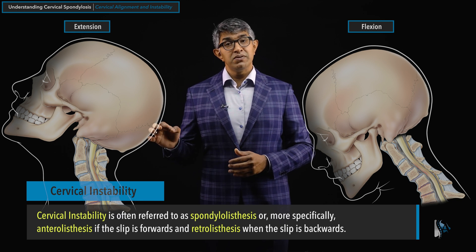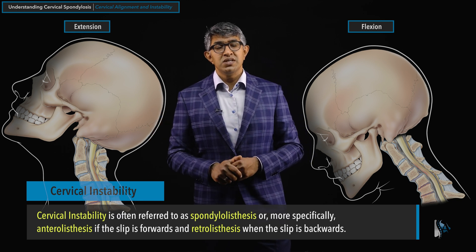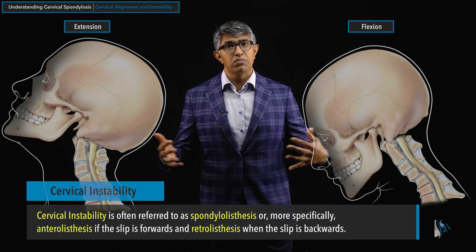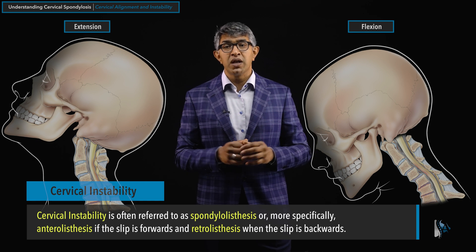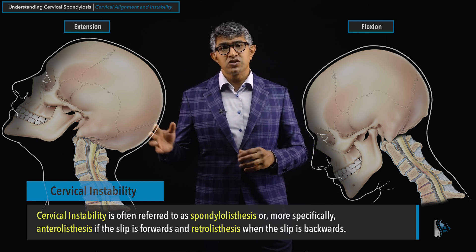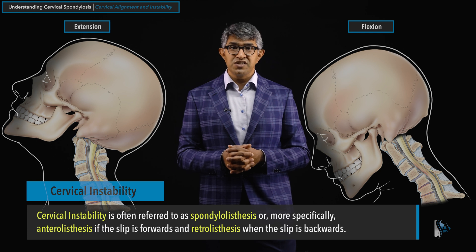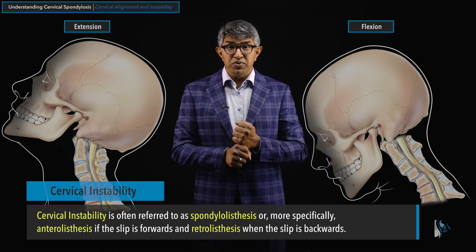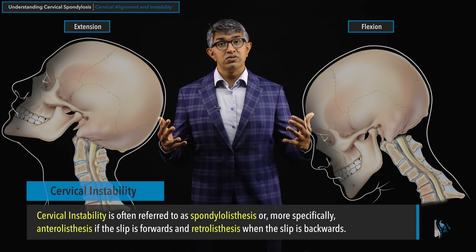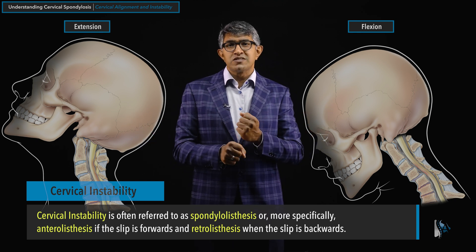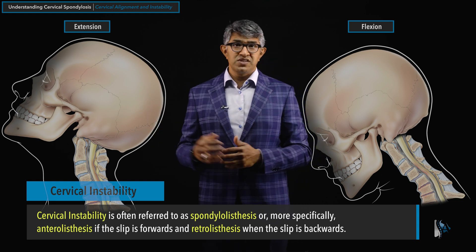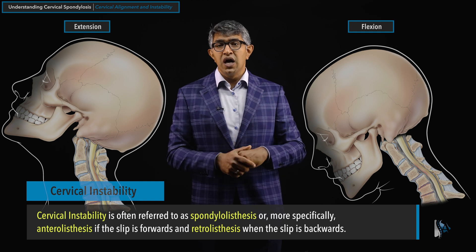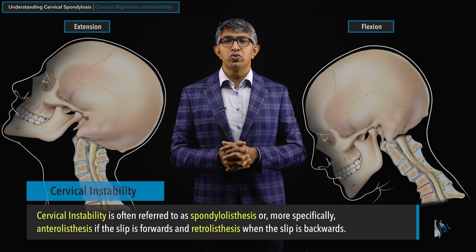When people have instability, one of the terms you'll sometimes see is spondylolisthesis, which is used more commonly in the lumbar spine but can be seen in the cervical spine as well. Radiologists will use this term frequently. What it implies is that one bone is slipping on top of the other. If one bone is slipping forward, we call that anterolisthesis. If it's slipping backwards, it's called retrolisthesis. It's nothing to be alarmed about — I just want you to be familiar with those terms in case you see them on an MRI or x-ray report.